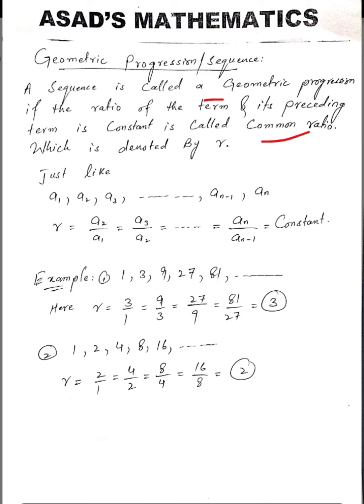If the ratio between two consecutive terms is the same for the whole sequence, then that sequence is called a geometric sequence.